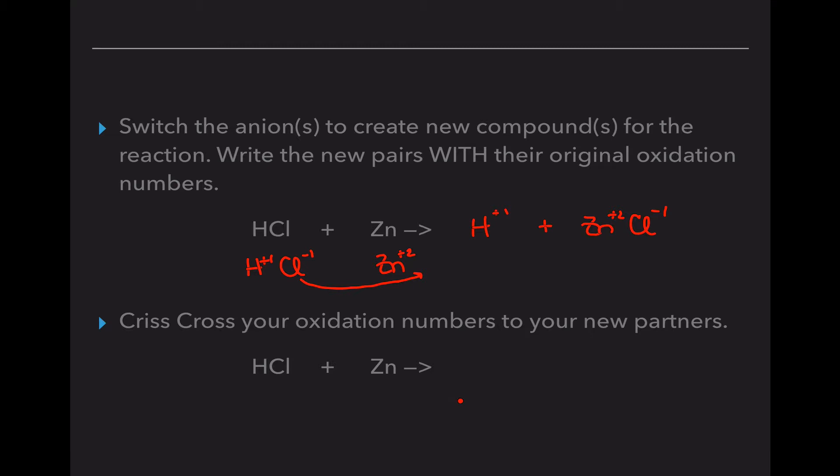Now that we've switched them we have to crisscross our oxidation numbers. So hydrogen for now I'm just going to leave all by himself. When we crisscross these down, this two with zinc goes outside to where chlorine is, and the one with chlorine goes to zinc. So we have ZnCl2. Now since hydrogen is a non-metal, he will bond to another hydrogen to become stable. So any non-metal that is left lonely, you can put a two down low. So now we have HCl plus zinc yields H2 plus zinc chloride or ZnCl2.